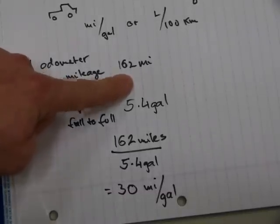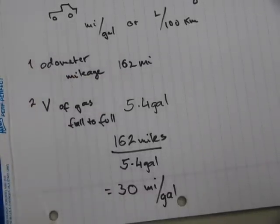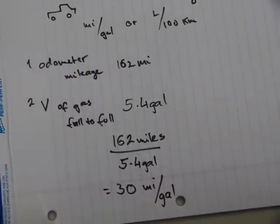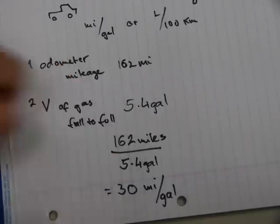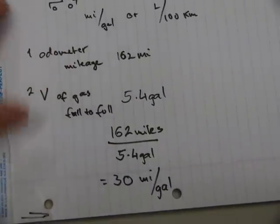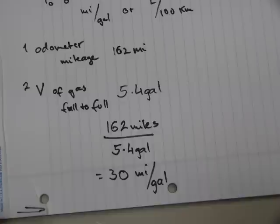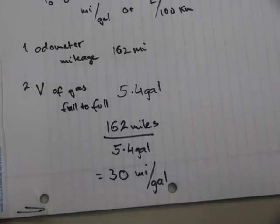Likewise, this could be land miles or nautical miles. It doesn't matter. You place your unit of distance here and the unit of volume here and you're going to get a calculation like 30 miles per gallon.